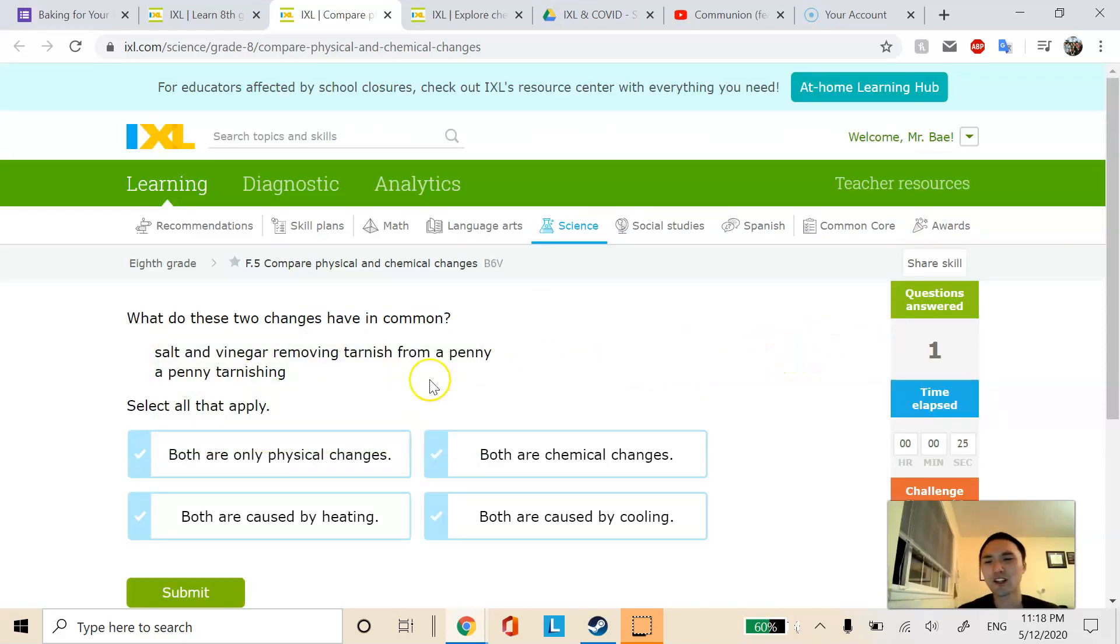Next one. Salt and vinegar removing tarnish from a penny. That is most definitely a chemical change, as is a penny tarnishing. These examples are actually in your book. So both are chemical changes. It's not clear if it's heating or cooling, so I wouldn't pick those.